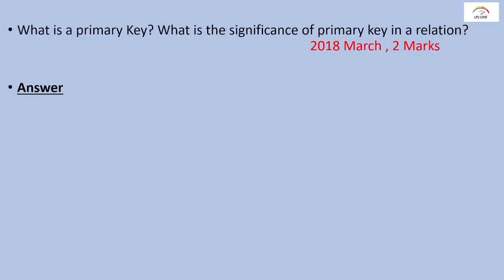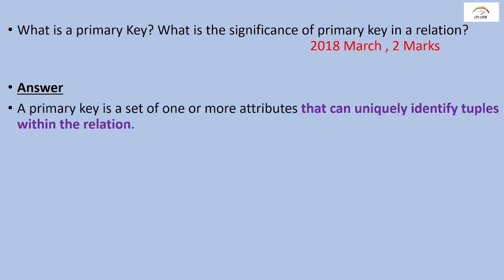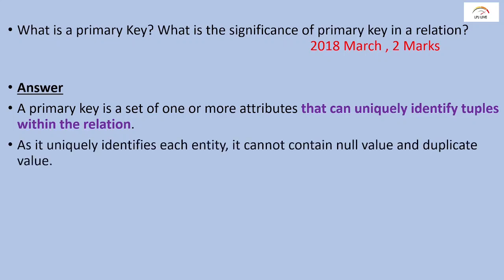What is the primary key and what is its significance? A primary key is an attribute or set of attributes that uniquely identifies a tuple in a relation or table. Its significance is that it ensures there are no null values and no duplicate values in the table.